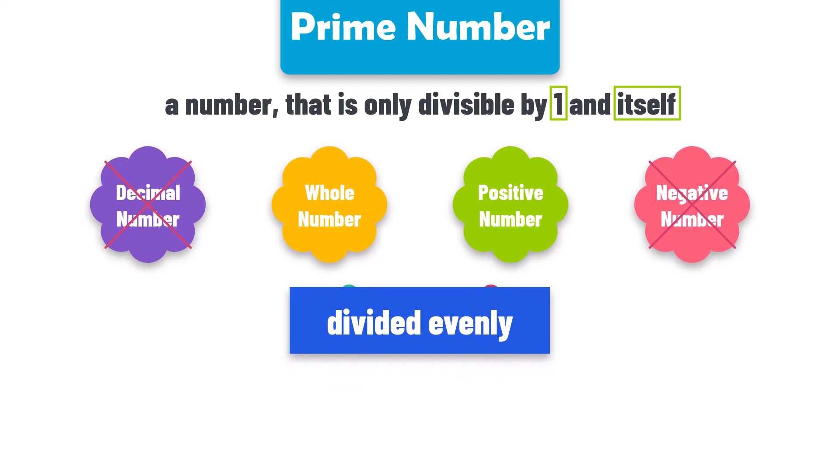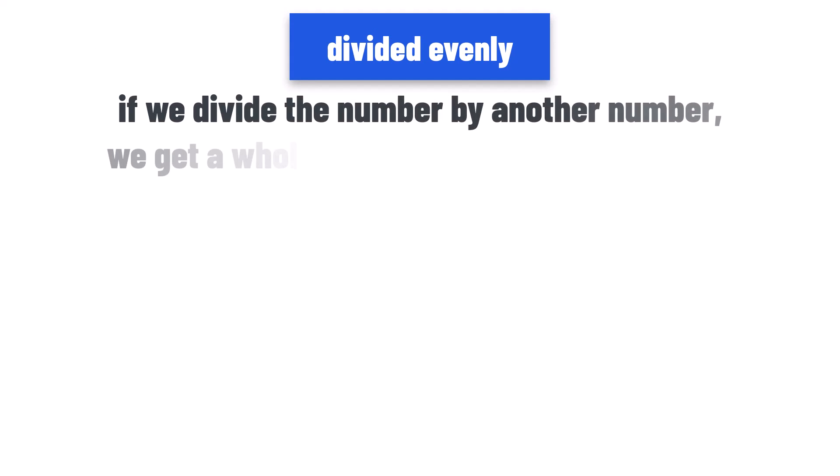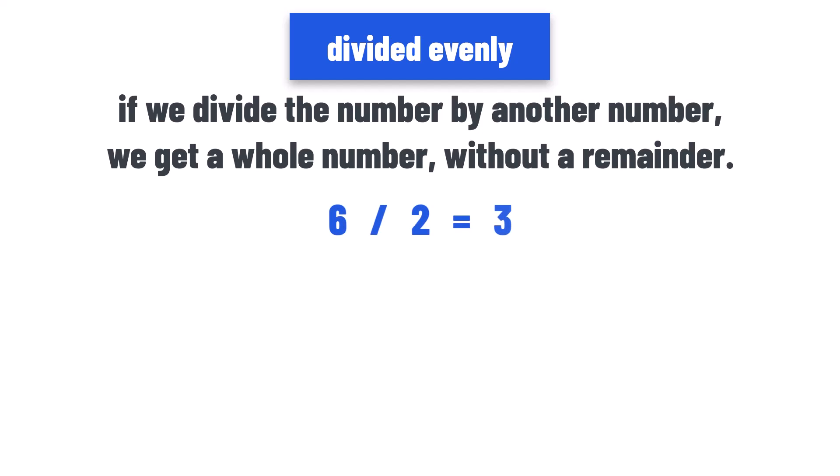What do I mean with divided evenly? This means if we divide the number by another number, we get a whole number without a remainder. It means we don't get a decimal number with a point. For example, 6 divided by 2 is 3.